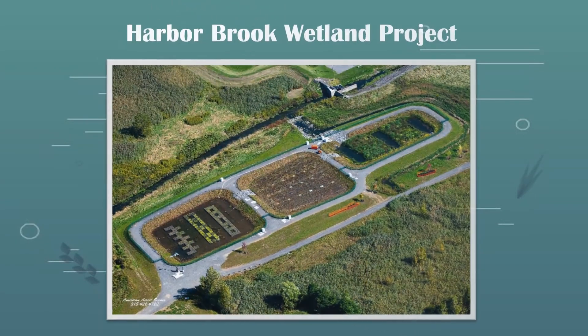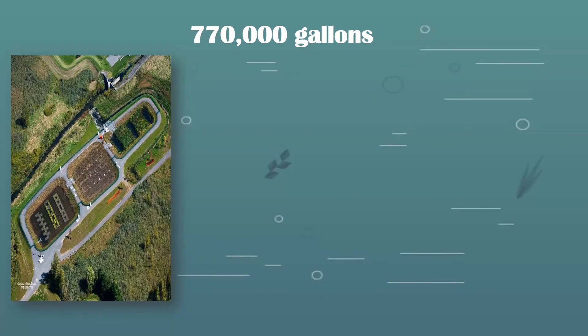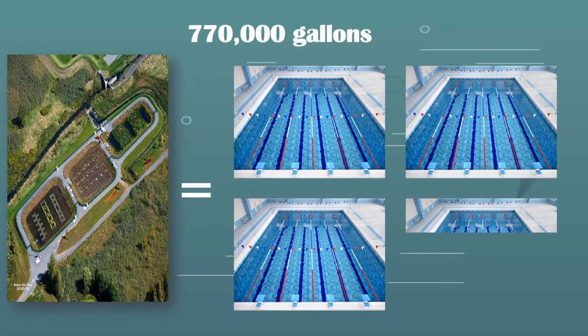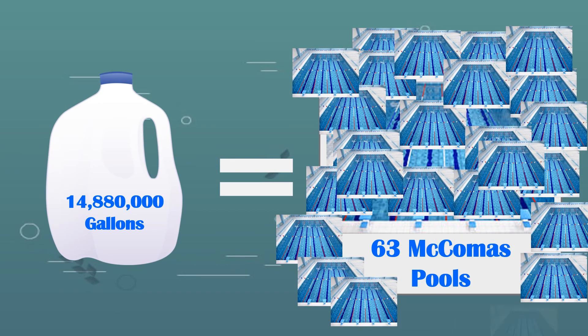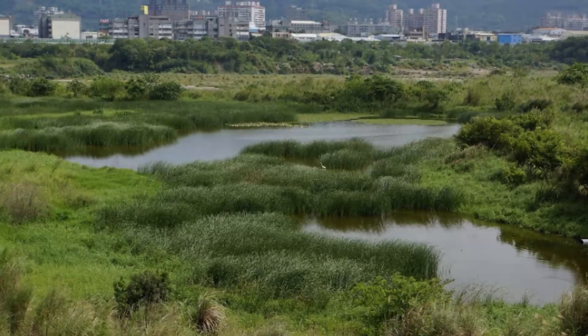The Harbor Brook Wetland Project is a great example of a constructed wetland. The project consists of floating wetland islands, vertical flow wetlands, and surface flow wetlands. This series of constructed wetlands is capable of holding 770,000 gallons of water when full, equivalent to 3.25 Olympic swimming pools. The water captured per year is the equivalent of 63 Olympic swimming pools.